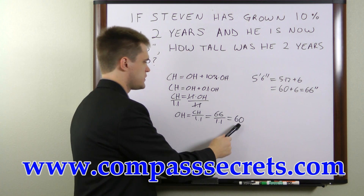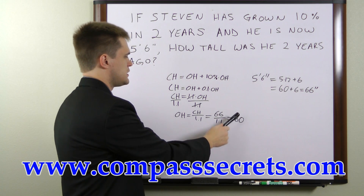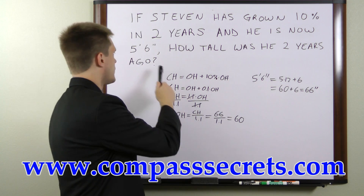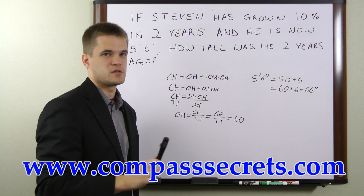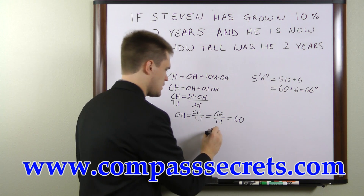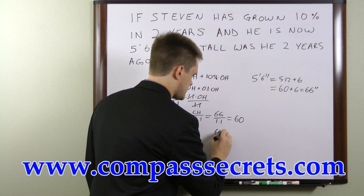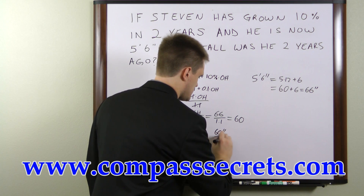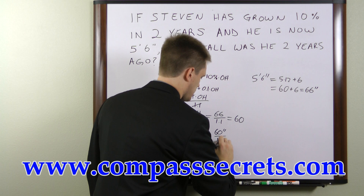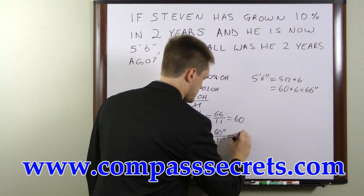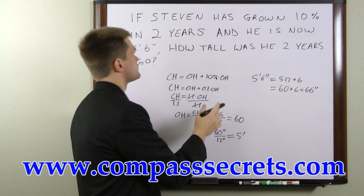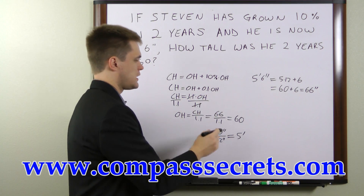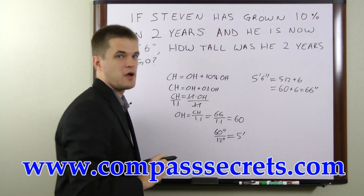66 divided by 1.1 is equal to 60, so Stephen's original height is 60 inches. We were given the measurement in feet and inches, so we need to convert it back. 60 inches divided by 12 inches per foot gives us 5 feet, so Stephen's original height is 5 feet.